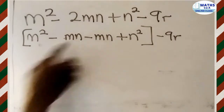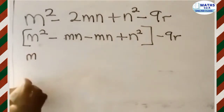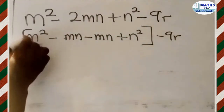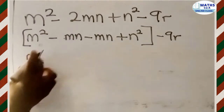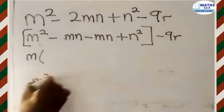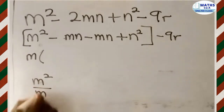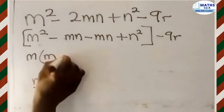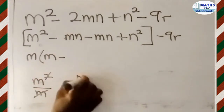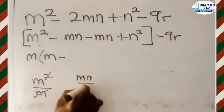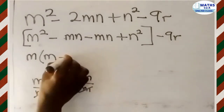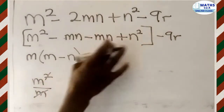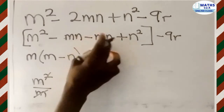We have M in the first term and M in the second term, so the common factor is M. We open a bracket: M squared divided by M gives M, and then MN divided by M gives N. So the first group factorizes to M times (M minus N).